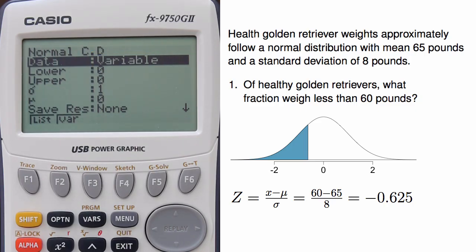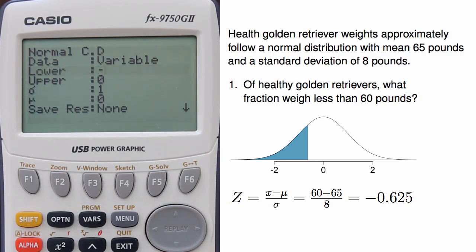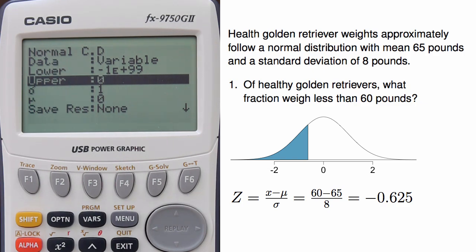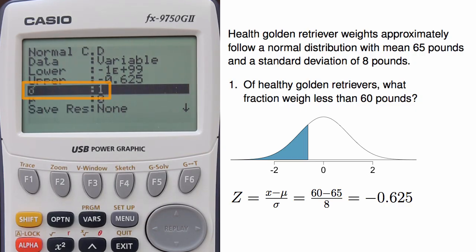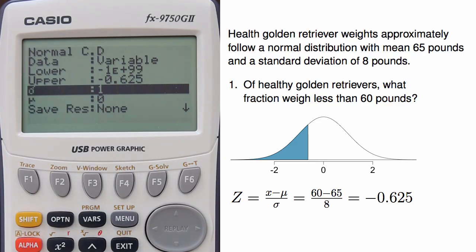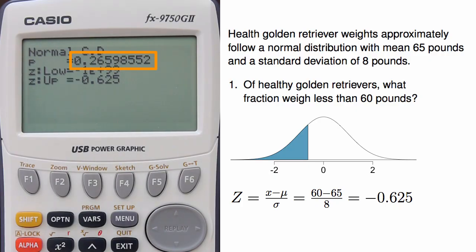Next, I need to enter a lower bound. However, I want to enter negative infinity. For now I'm going to punch in a very, very negative number: negative 1e99, which is negative 1 followed by 99 zeros. Next, I enter the z-score for the upper bound, which is negative 0.625, and then I want to make sure that I'm using the standard normal distribution. The standard deviation should be 1 and the mean should be 0. I've got my lower bound and my upper bound, which is my z-score, and I'm using the standard normal distribution, so I can hit execute to get the result: about 0.2660.